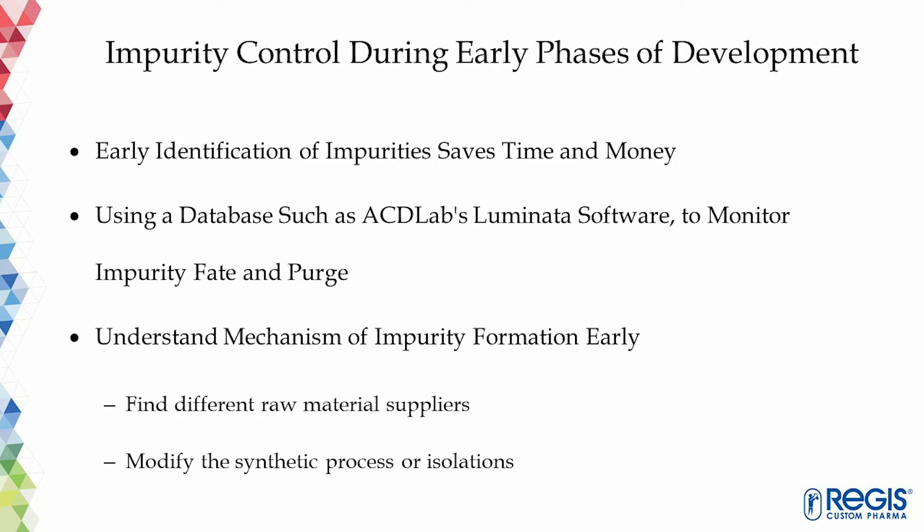Impurity control activities occur during all phases of drug development. At Regis, we worked on different projects at different phases of drug development. We found out that controlling impurities during early phases of development has a greater advantage than delaying to later phases. The early identification of impurities saves time and money. Spending some money early will have a positive impact on the overall cost and time of the drug development project.